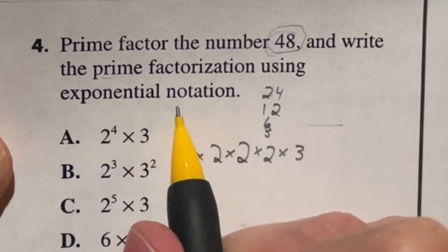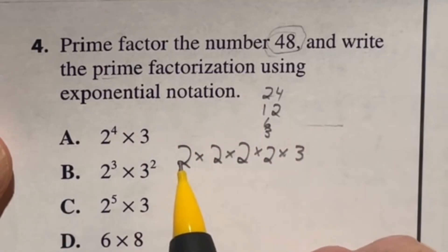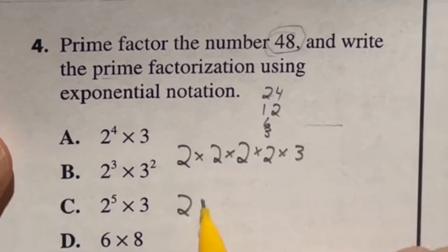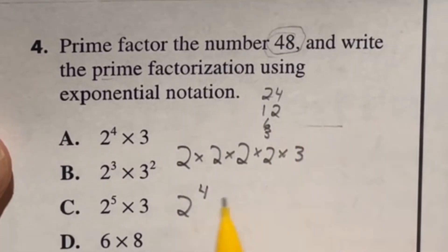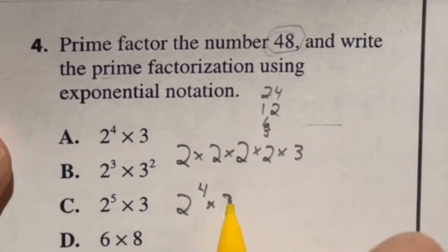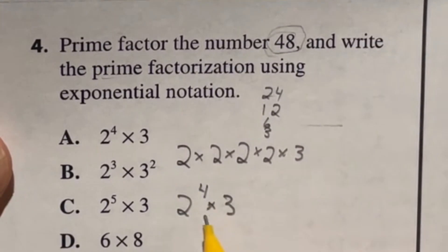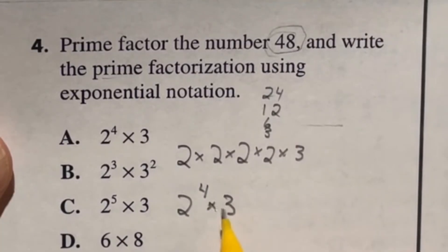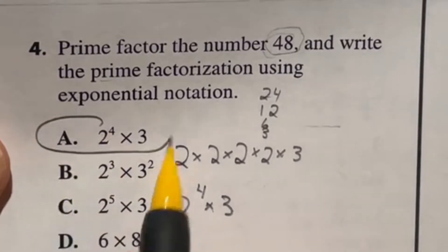Now when it says exponential notation, it's saying to write these in terms of being two raised to a power instead. So in this case, I have two times itself four times, and I have three times itself one time. So the prime factorization here would be two to the fourth times three, which is answer A.